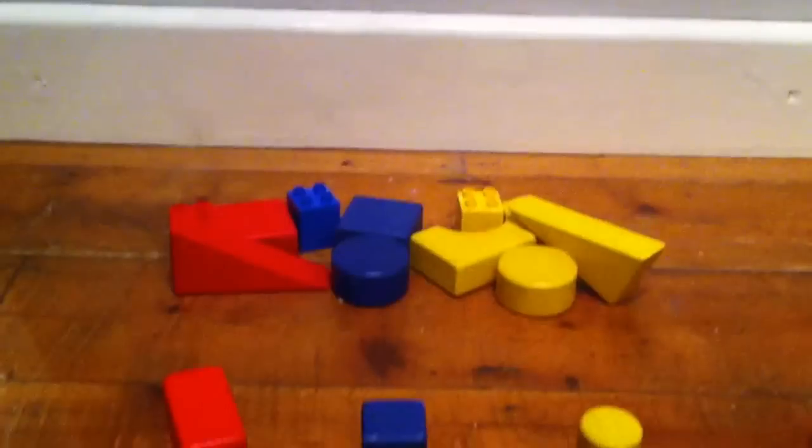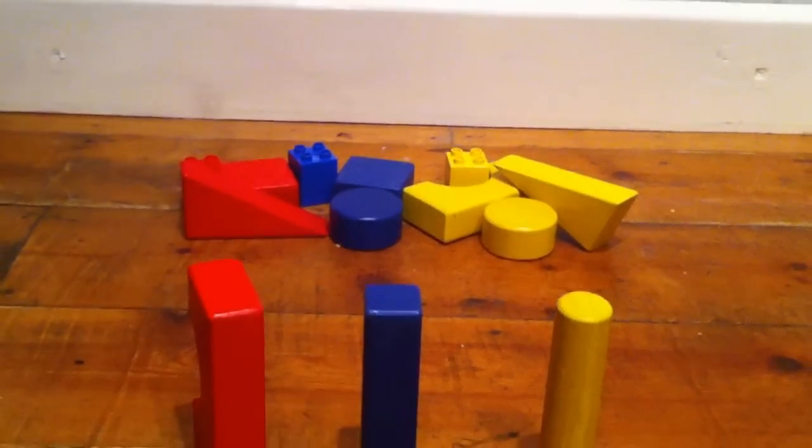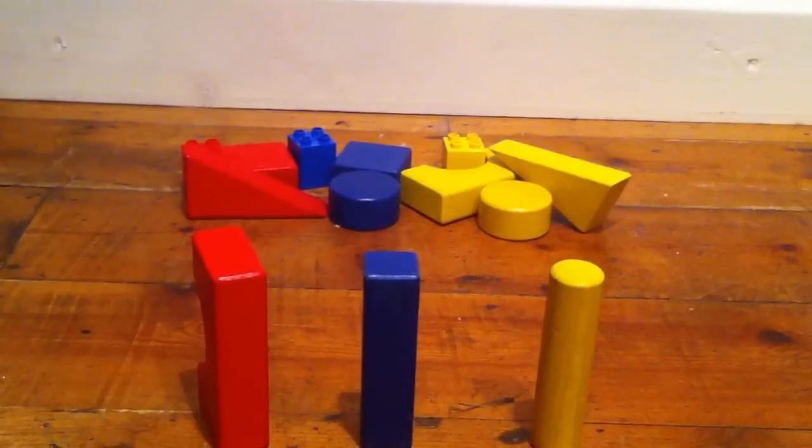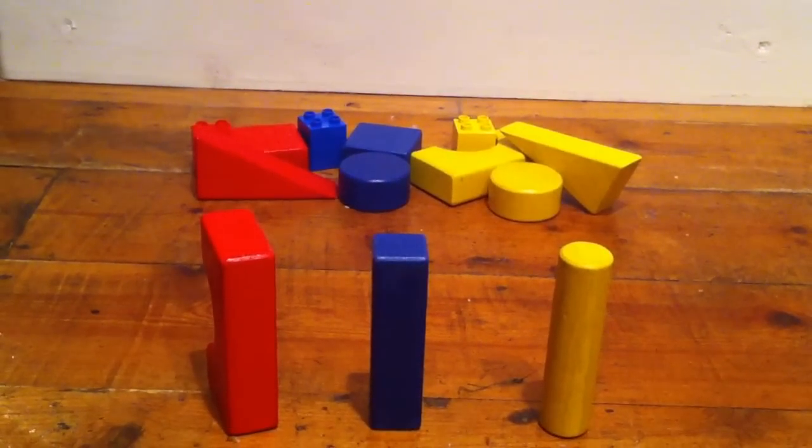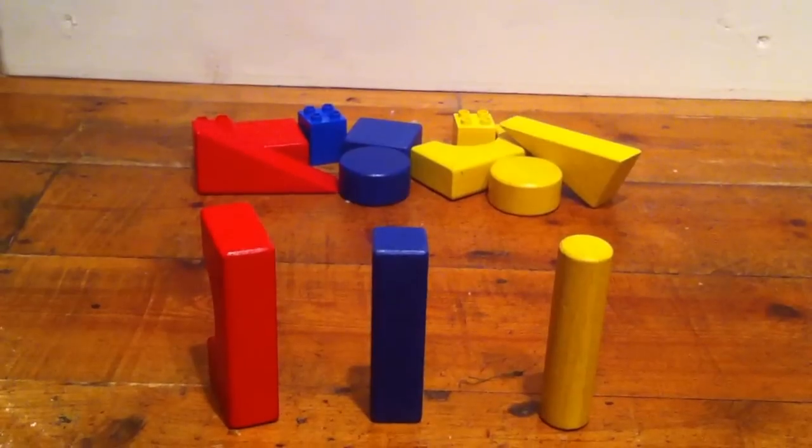It counts up the number of mentions in each source. So for example here, let's say there is one mention in a newspaper in red, one Twitter mention in blue, and one blog mention in yellow.